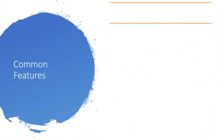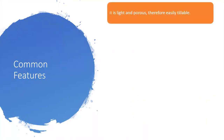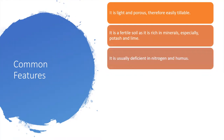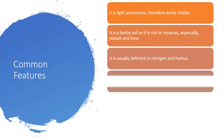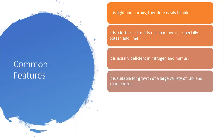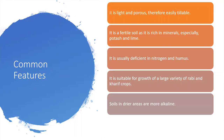Coming to the common features of alluvial soil. It is light and porous, therefore easily tillable. It is a fertile soil as it is rich in minerals, especially potash and lime. It is usually deficient in nitrogen and humus. An exception is the alluvial soils found in the Ganga-Brahmaputra Delta, which is rich in humus. Soils in dry areas are more alkaline.